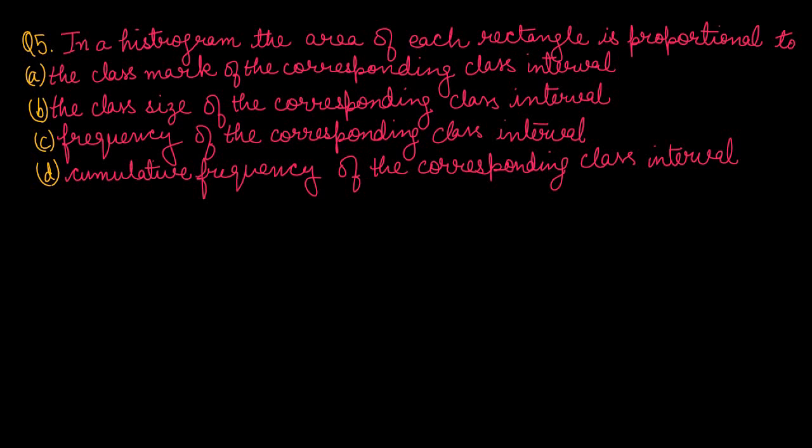Question number 5: In a histogram, the area of each rectangle is proportional to — A) the class mark, B) the class size, C) the frequency of the corresponding class interval, or D) the cumulative frequency? In a histogram, the area of each rectangle is proportional to the frequency of the corresponding class interval. Option number C is the right one.